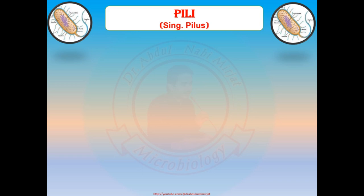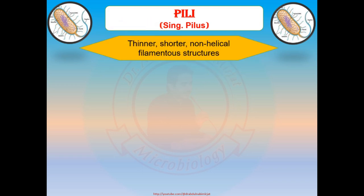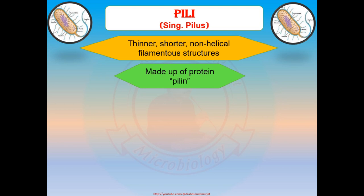Now let's discuss another bacterial structure called pili — singular: pilus. Pili are thinner, shorter, non-helical, and filamentous structures made up of the protein pilin. Pili are 0.3 to 1 micrometer in length and about 7 nanometers in diameter. Comparing pili with flagella: flagella are helical and help in motility, whereas pili are non-helical and do not play any role in movement.